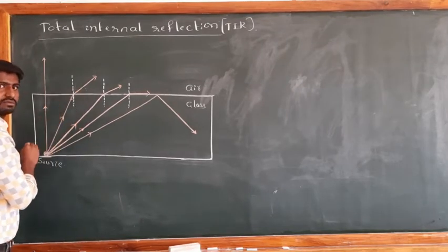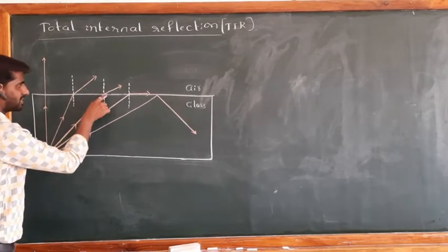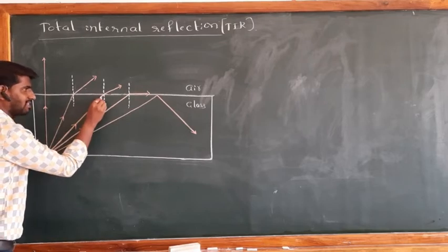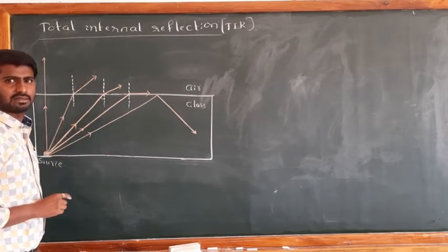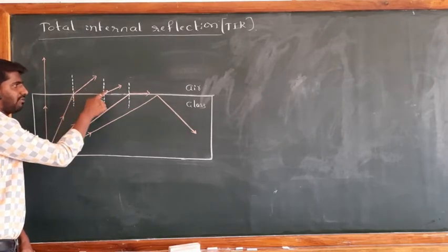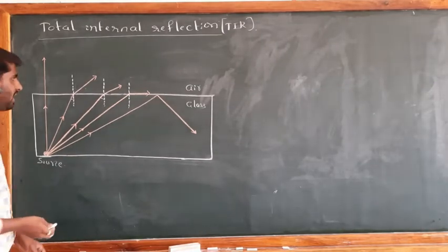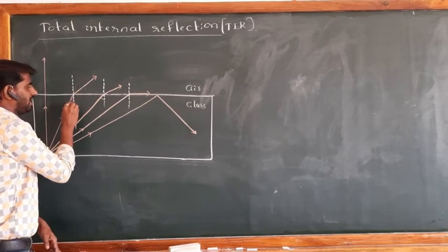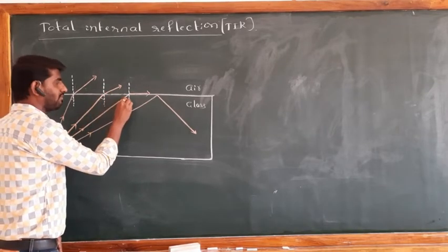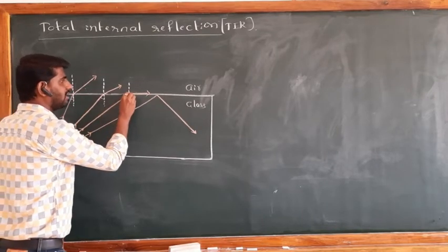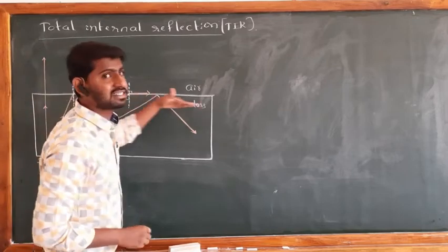The angle of incidence is less than the angle of refraction. As we increase the angle of incidence, the angle of refraction also increases. If we increase the angle of incidence still more, the refracted ray reaches 90 degrees — the refracted ray just grazes the surface.